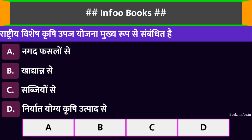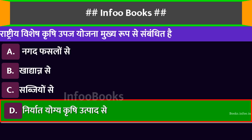राष्ट्रीय विशेष कृषि उपज योजना मुख्य रूप से संबंधित है। Option A: नगद फसलों से। Option B: खाद्यान्न से। Option C: सब्जियों से। Option D: निर्यात योग्य कृषि उत्पाद से। सही विकल्प है: निर्यात योग्य कृषि उत्पाद से।